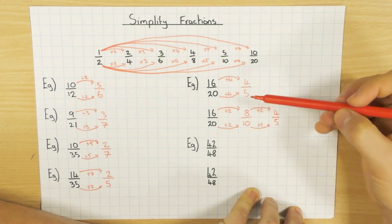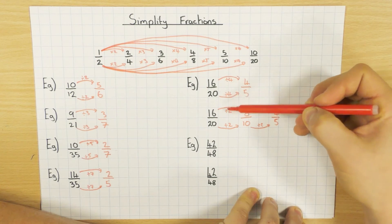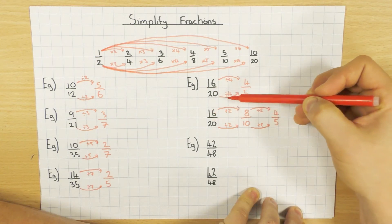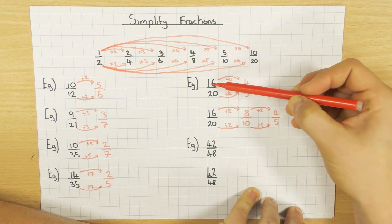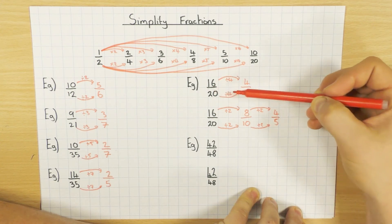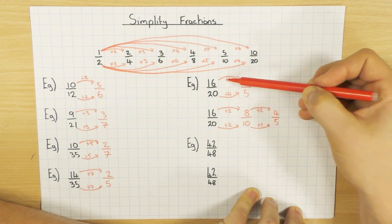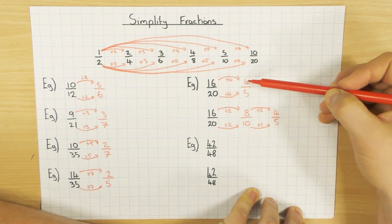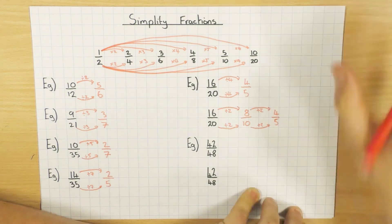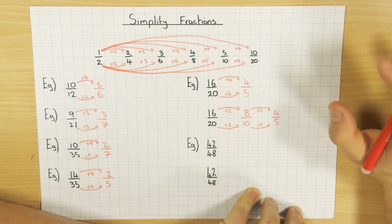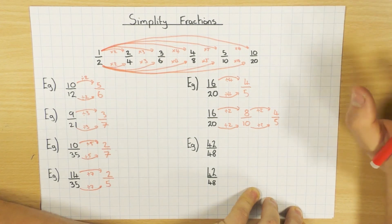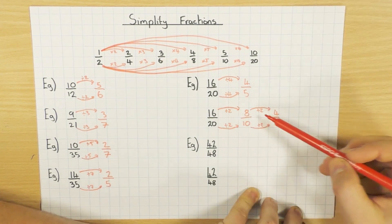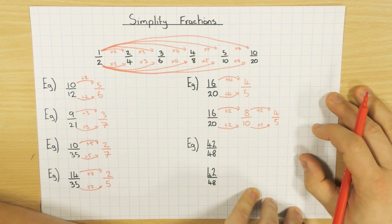The quick way, as you might have noticed, is that 4 — not 2 — goes into both these numbers. 4 is the highest common factor: the highest number that goes into both. If you find the highest common factor, like we did here — which is 4 — and divide by it, you'll always get the fraction in its simplest form straight away. So if you can spot the highest common factor, use it; it'll just be one step. If you can't, just do a few steps — it's not a problem.